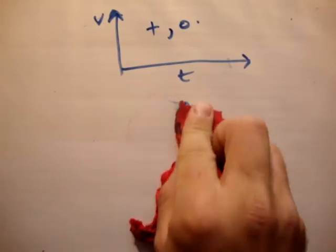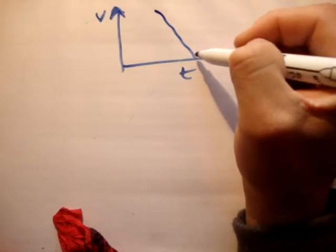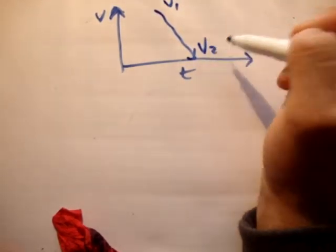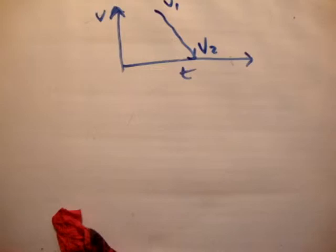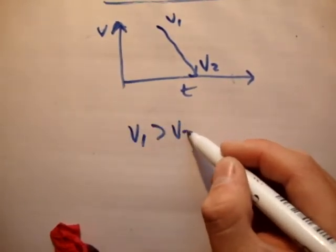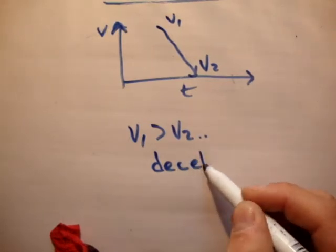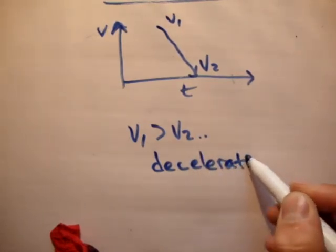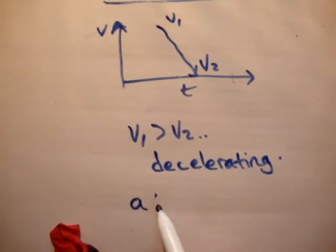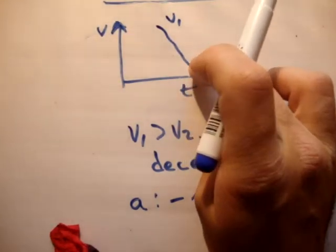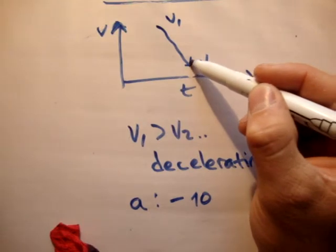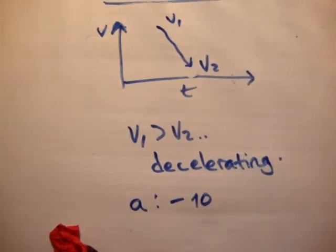However, your acceleration can be both positive and negative. Say for example, I start up here, and I go down here. And I'm at v1, and I'm at v2 here. Now, if v1 is greater than v2, then I am decelerating. So we'll say a would be minus 10, for example. However, v2, say v2 didn't go to zero. Say it was there. Well, v2 is still positive, because it's still positive. So the sign on that, it will still be plus.